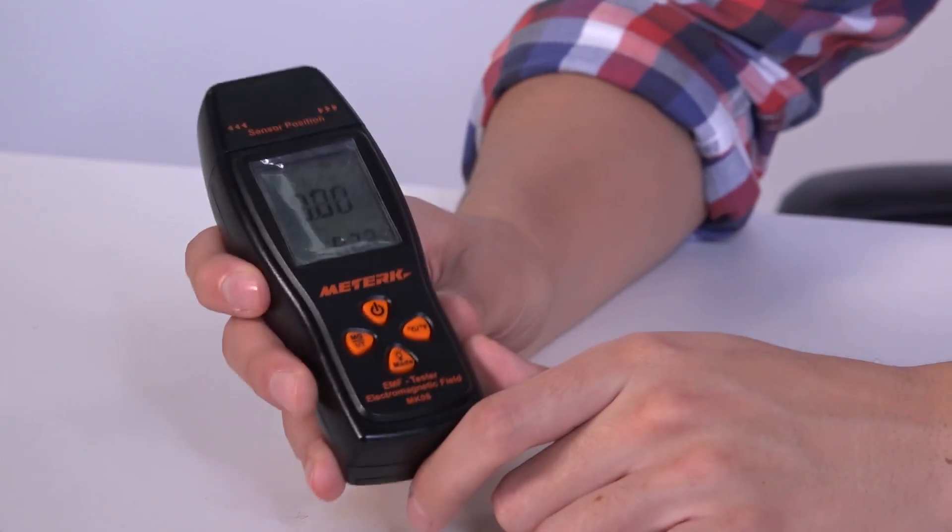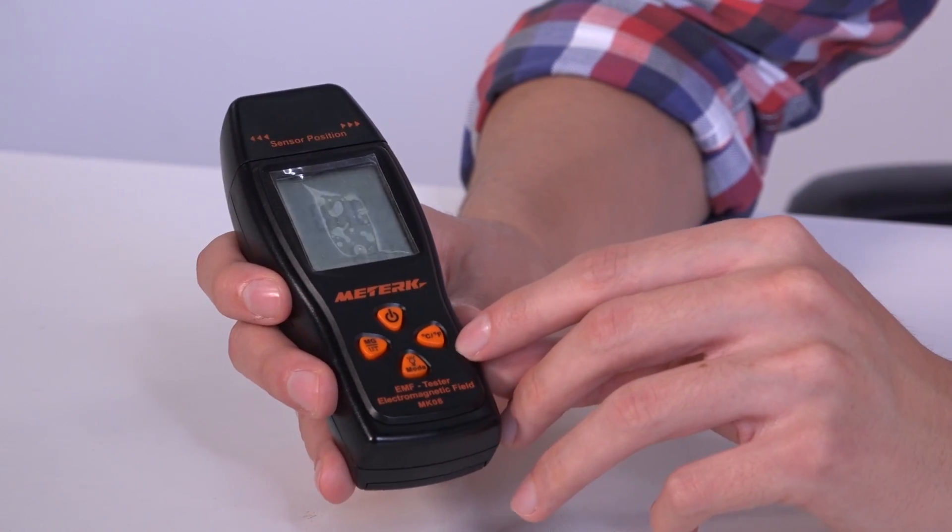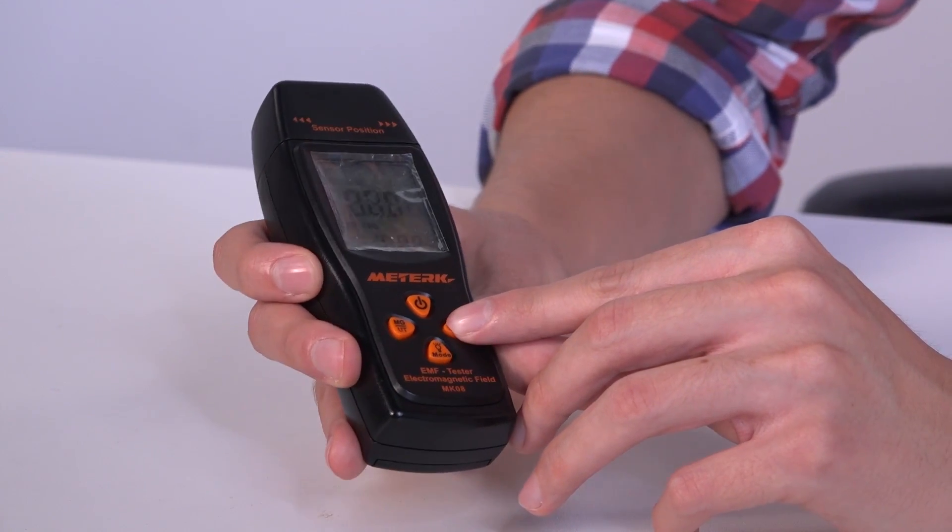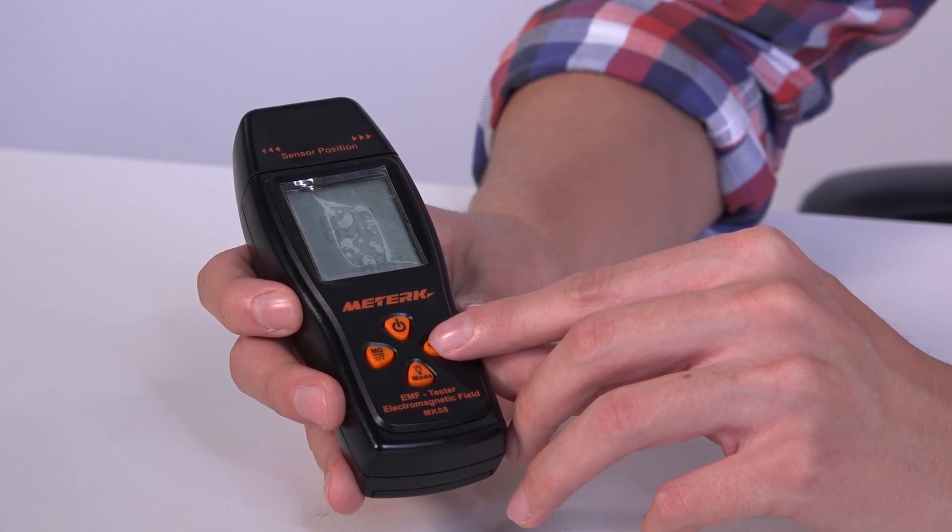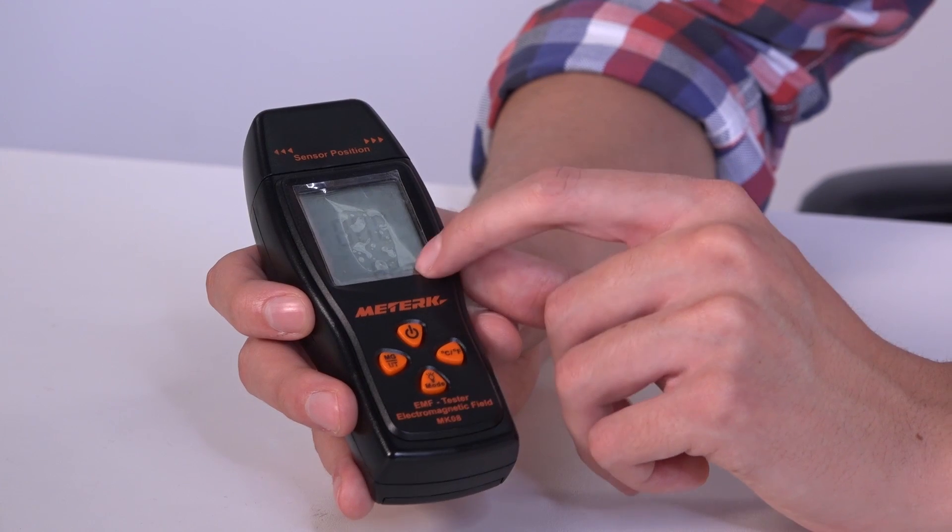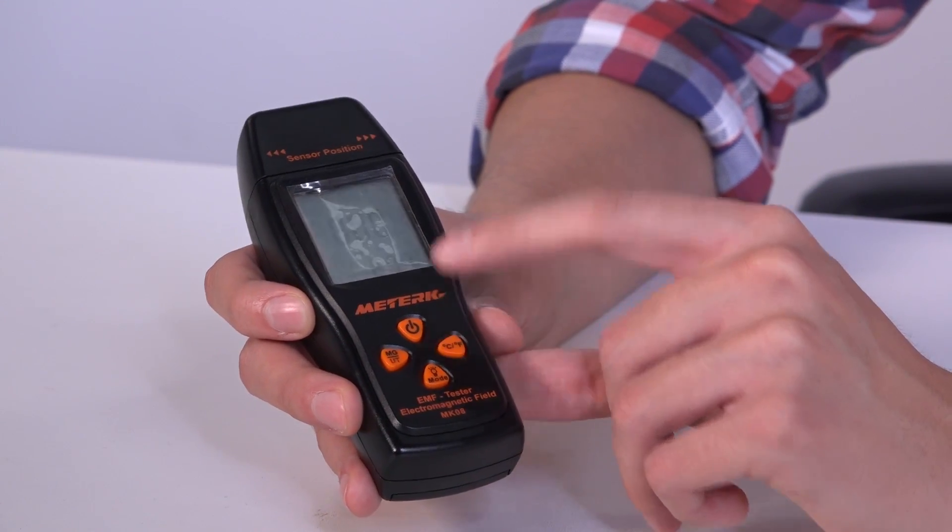So last but not least, is the temperature button in which we can change the units in which we measure the temperature. It can either be in Fahrenheit or in Celsius.